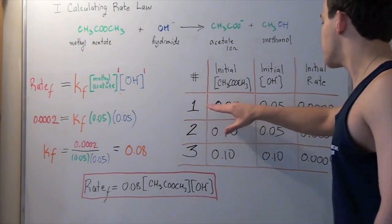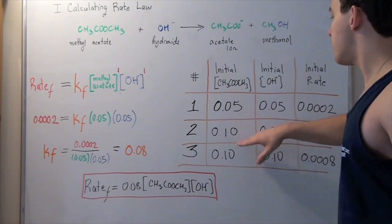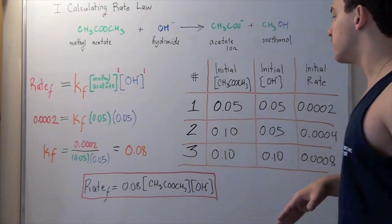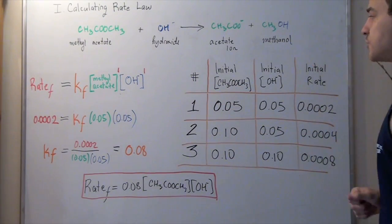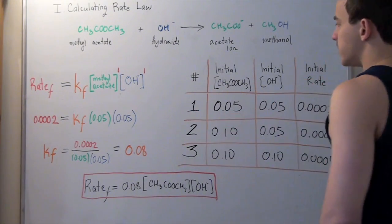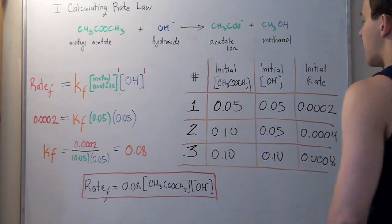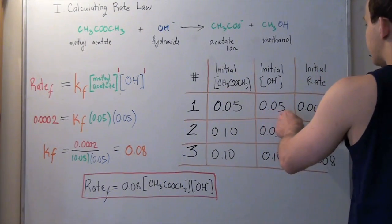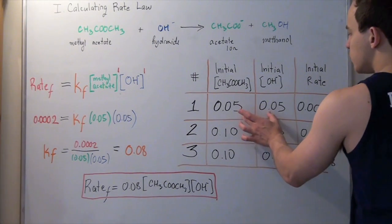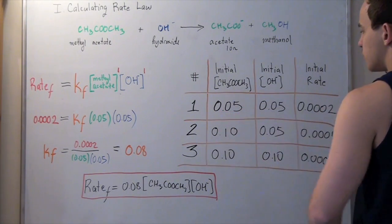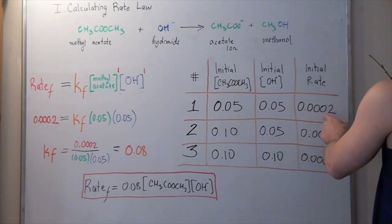The first experiment will serve as a control. We're going to compare our second and third experiments to our first experiment and see how our initial rate changes. In the first experiment, we have 0.05 molar of initial methyl acetate and 0.05 molar of initial hydroxide. When these two concentrations are 0.05 each, our initial rate is 0.0002.